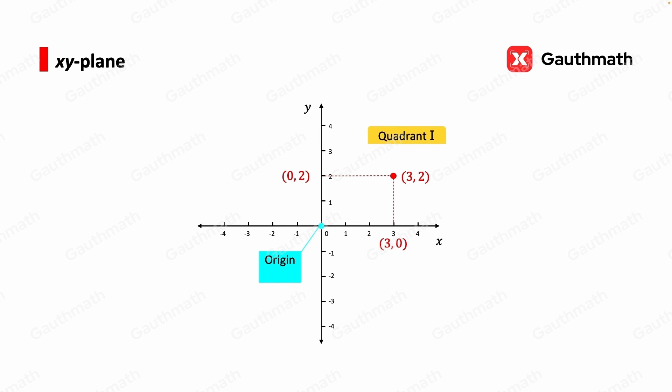Starting at the top right corner, that's quadrant 1, and then move counterclockwise. We have quadrant 2, quadrant 3, and then quadrant 4.